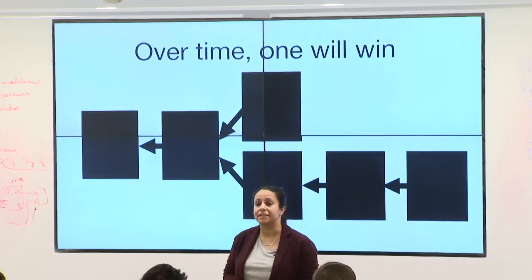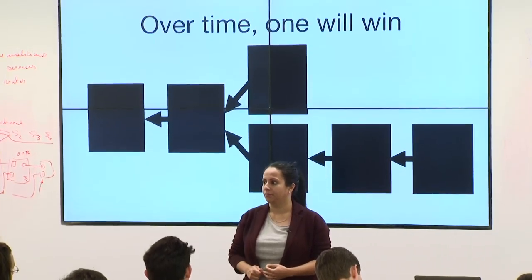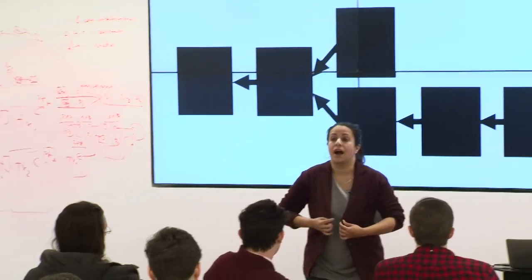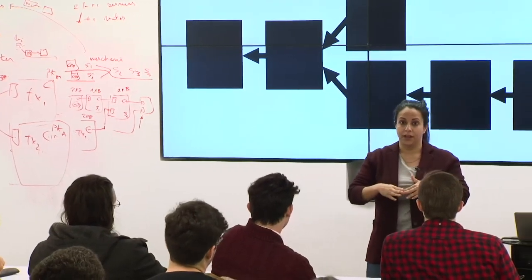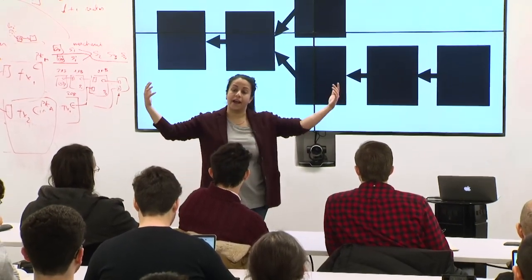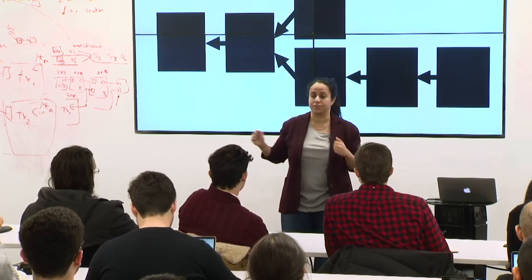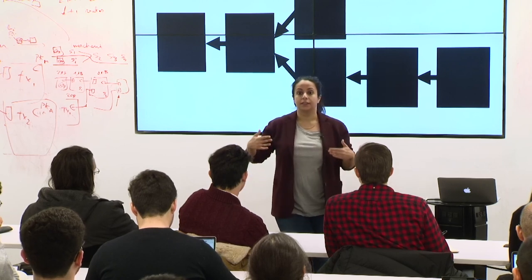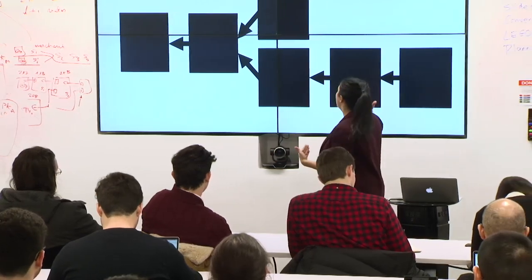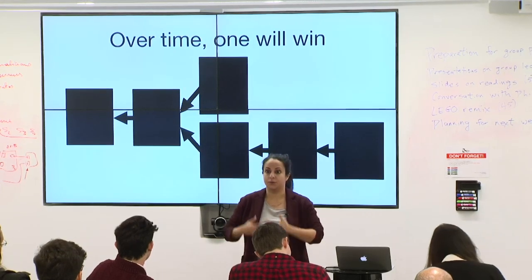Does anyone know why we take the heaviest chain instead of the longest chain? Someone could lower their difficulty level and create a bunch of blocks, slowly decrease the difficulty, create a nice long chain with many low-difficulty blocks, and say 'I've got the longest chain.' They could do that with less than a majority of the hash power. This is not an easy attack, but it is a possible attack. That's why we take the heaviest chain, which represents the most hash power in the system — the majority of the system.